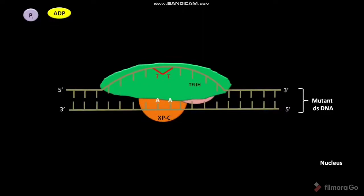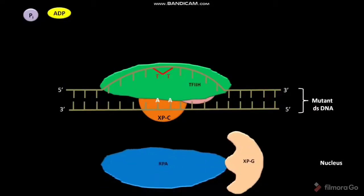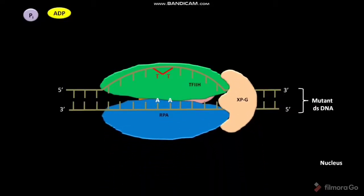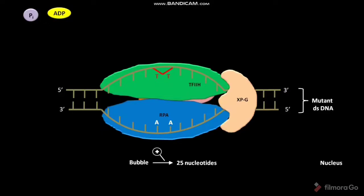XPG and RPA proteins then bind to the protein complex. XPG and RPA then further unwind and destabilize the DNA double helix. As a result, a bubble of approximately 25 nucleotides is formed.